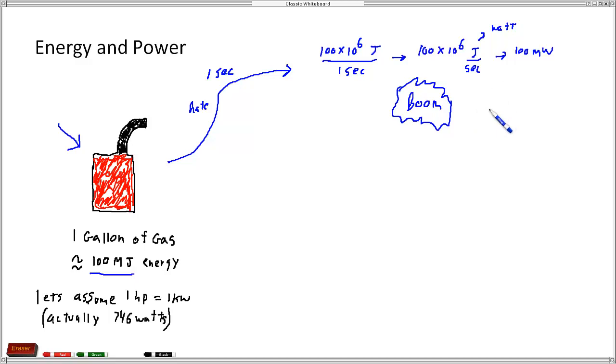Because we said that one horsepower is approximately one kilowatt, then this is also equal to 100,000 horsepower. That's a lot of power. We started out with 100 megajoules of energy. We're using it up in one second. That's 100 megawatts or 100,000 horsepower.